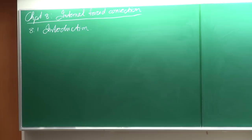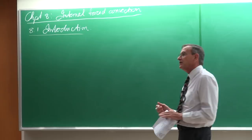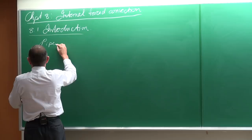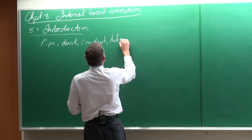The first part in the introduction: terminology is quite important. The first terminology that is introduced is a pipe — what is considered a pipe, a duct, a conduit, and a tube. You'll see that these things are being used everywhere, but they are actually small changes in terms of meaning.